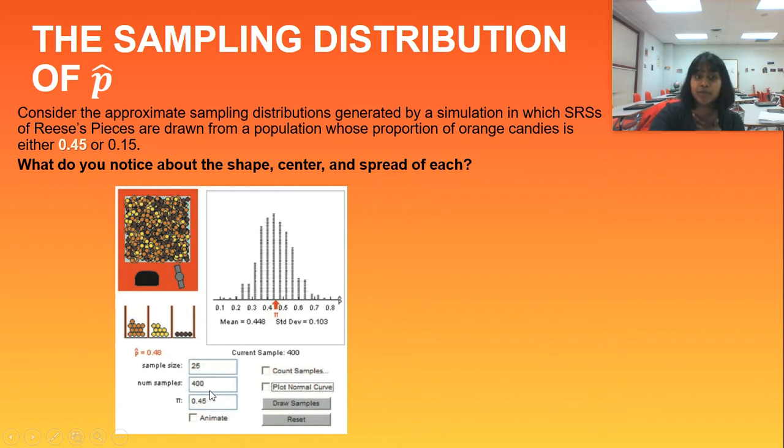And the number of samples that we drew, and we're going to draw in each of these simulations, is 400. So this is the dot plot of 400 different simulations, each with a sample size of 25. And we're testing the theory that we know we have an orange proportion of 0.45. So if you're looking at just the orange candies, that's our dot plot.